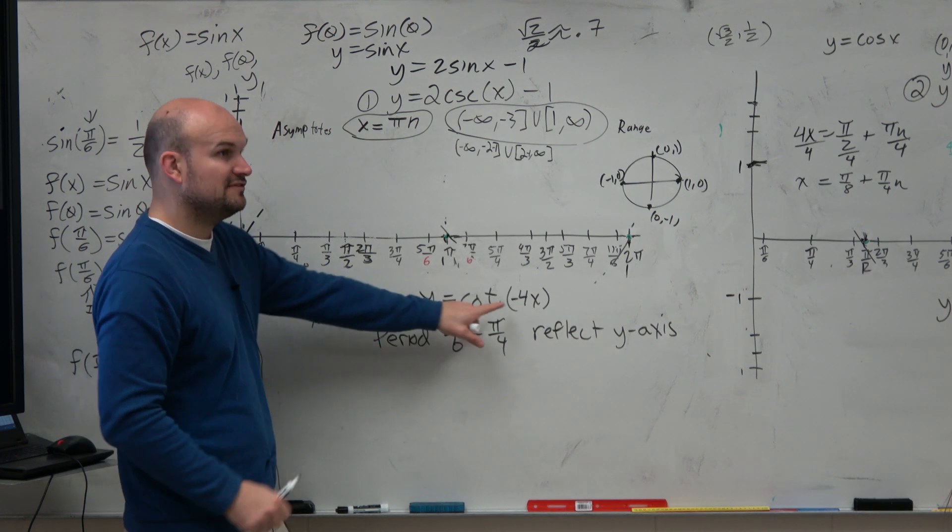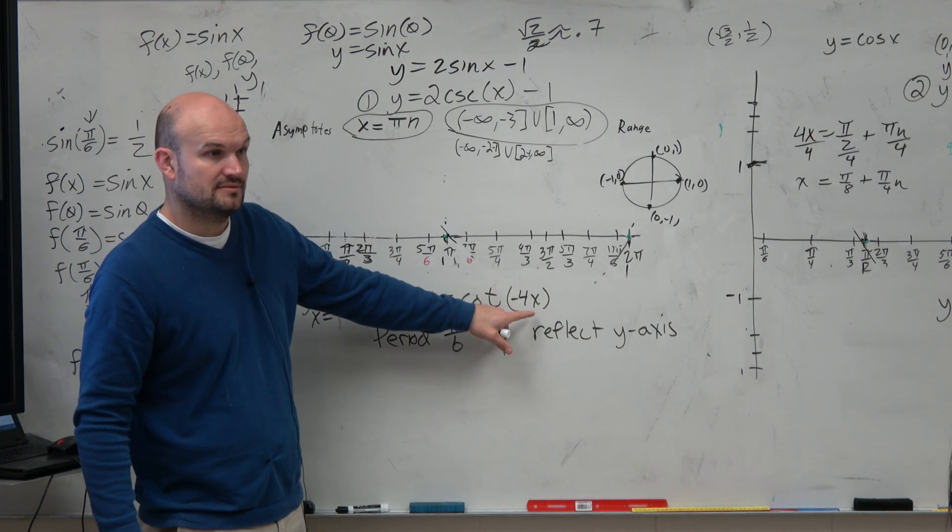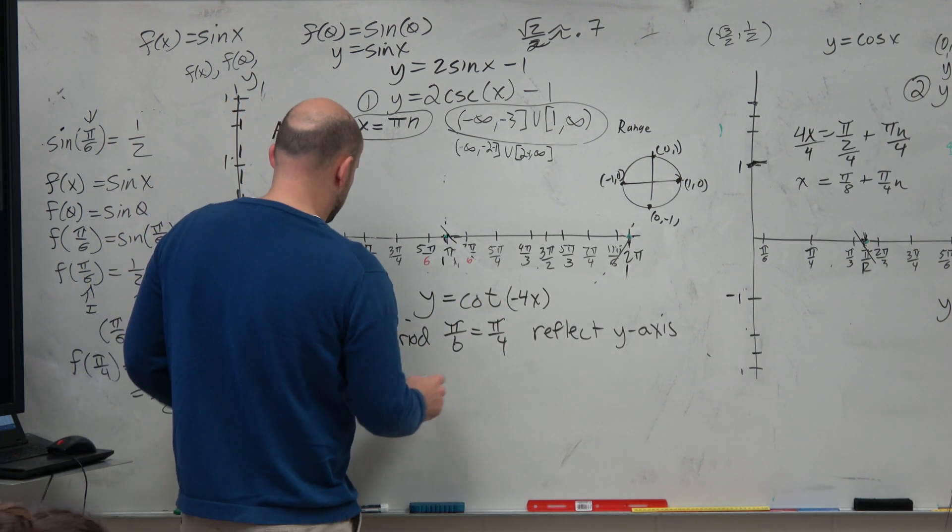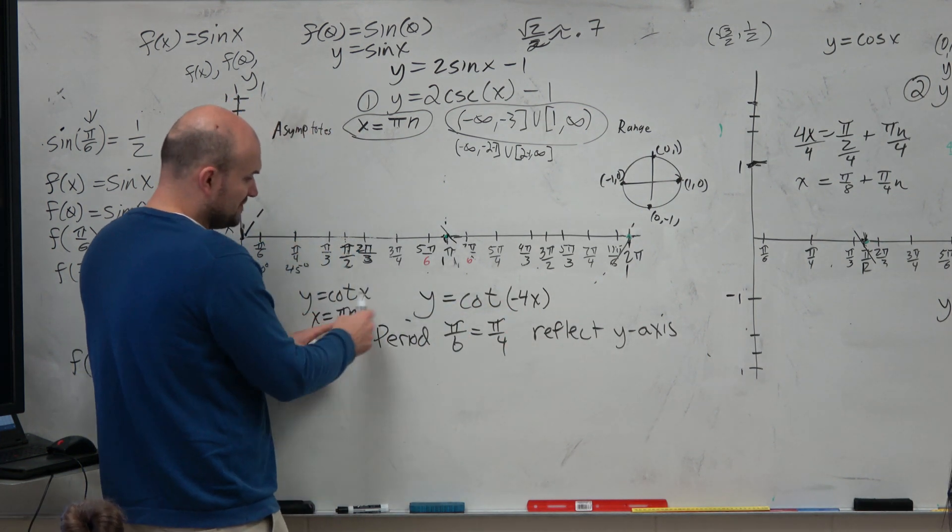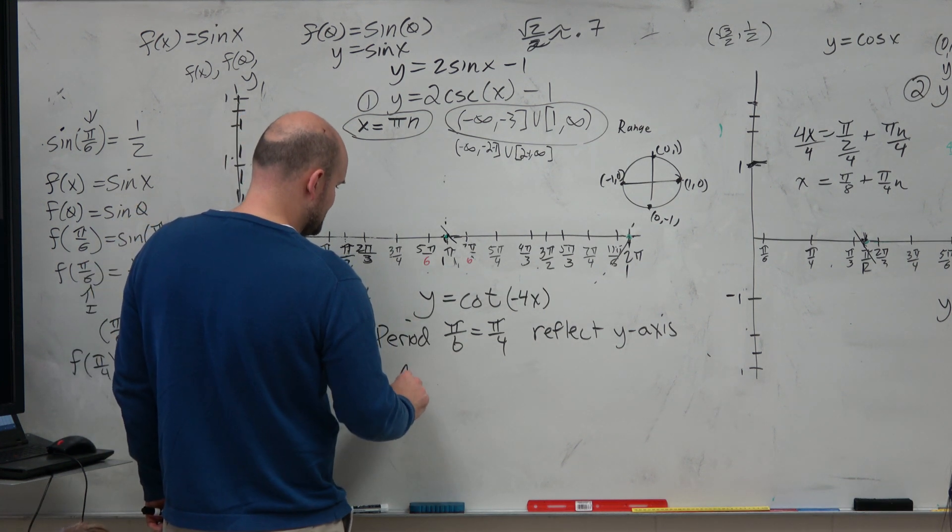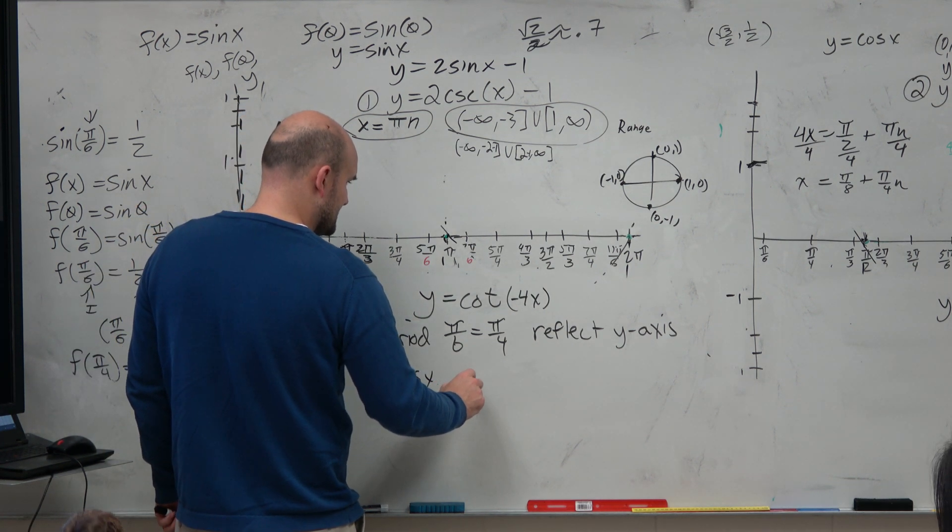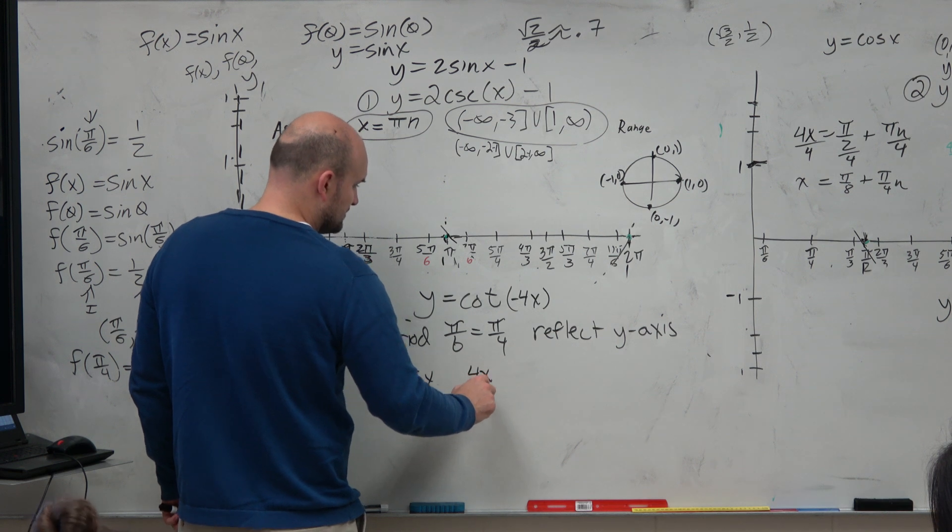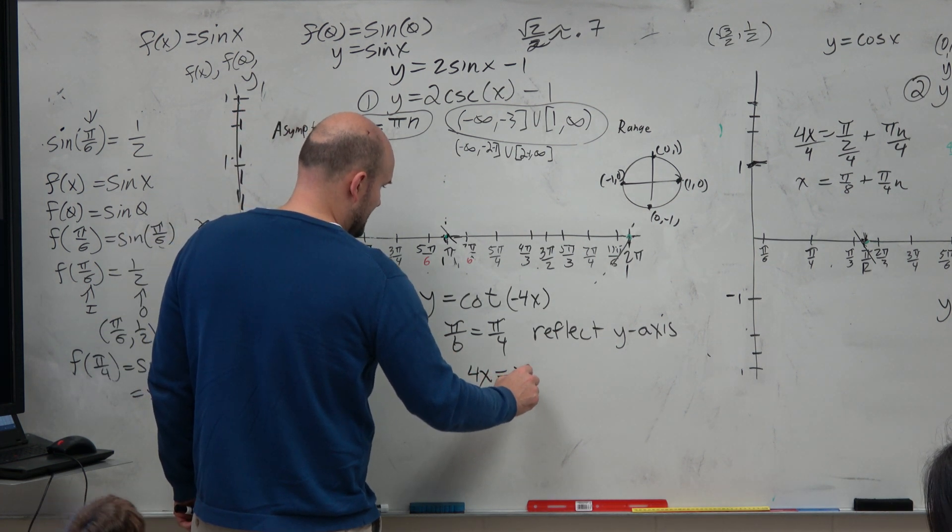However, I have a change in my period, don't I? Right? So all I need to do to find my asymptotes is I need to have 4x, because that's the change in my period, is equal to pi n.